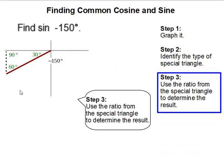Step 3: Use the ratio from the special triangle to determine the result. Since this is a 30-60-90, my ratio becomes 2x for the hypotenuse.